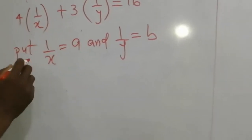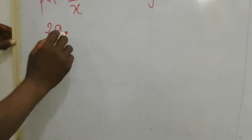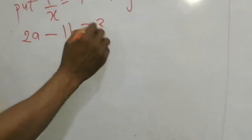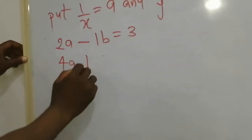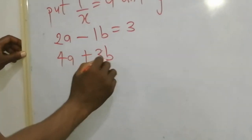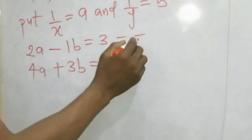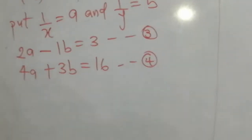So let's put that into equations 1 and 2. We have 2a minus 1b equals 3, and 4a plus 3b equals 16. This is another thing entirely. We can call this equation 3 and equation 4.